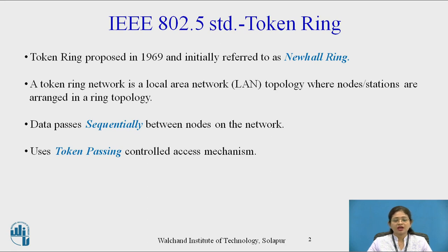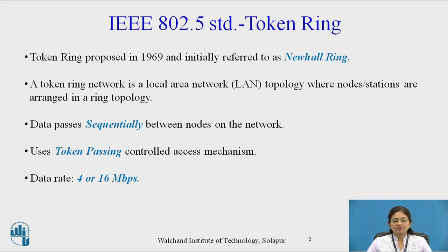We will see what a token is and the frame format of the token in this lecture. The data rate is 4 or 16 Mbps. If the token ring data rate is R Mbps, then the token ring emits one beat after every 1/R Mbps.